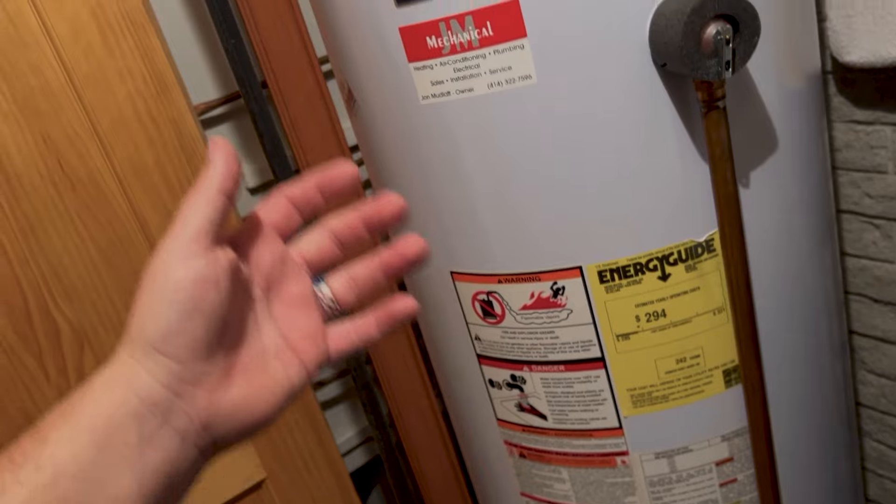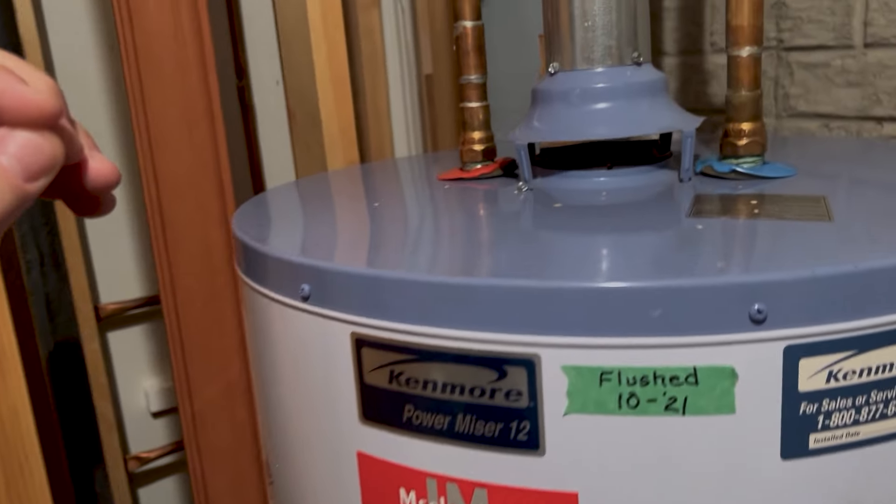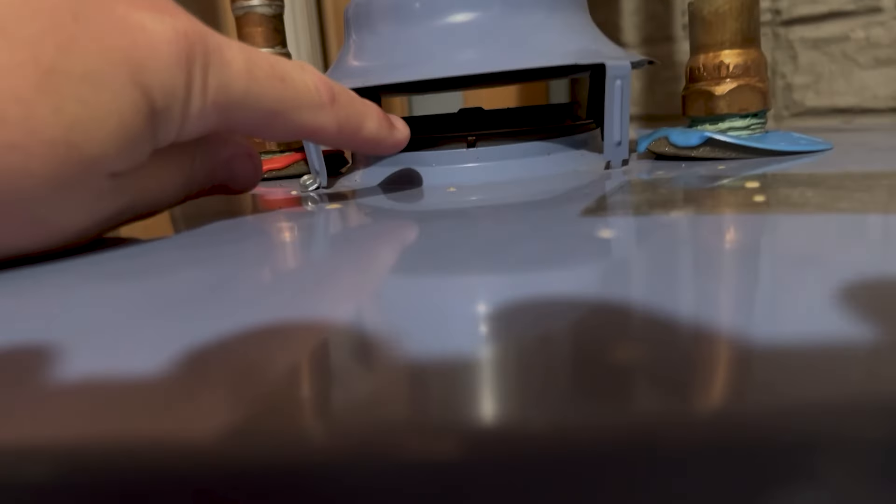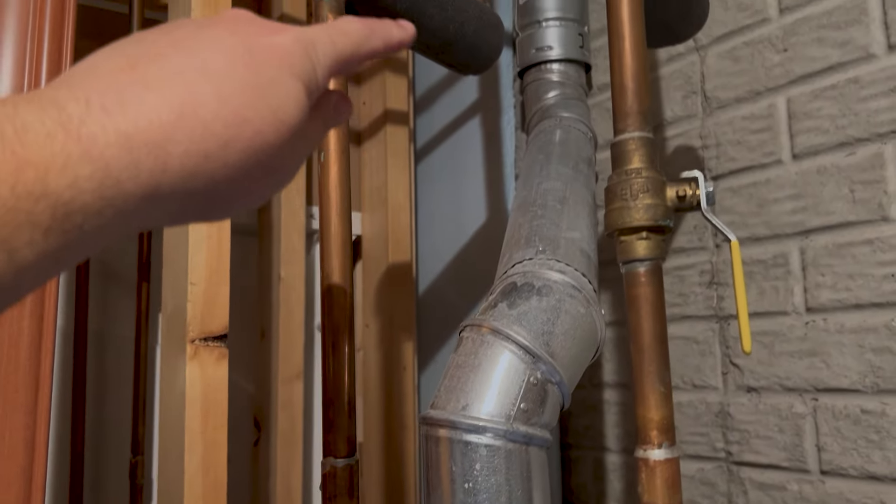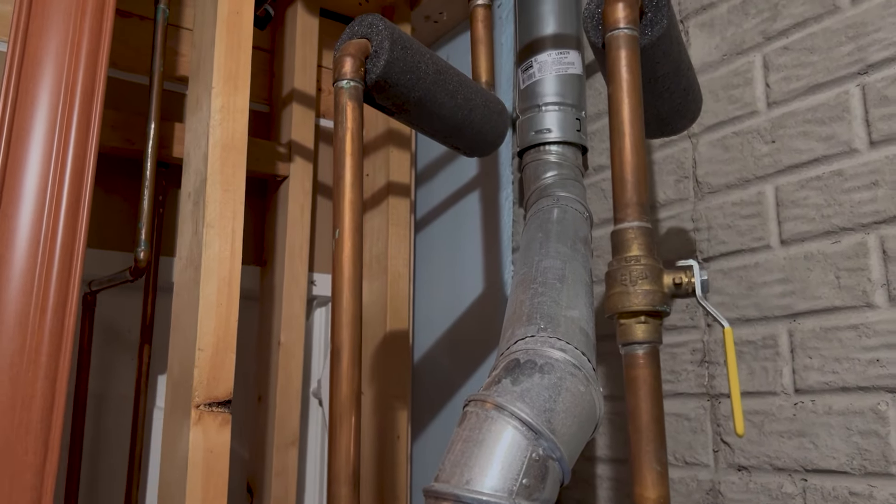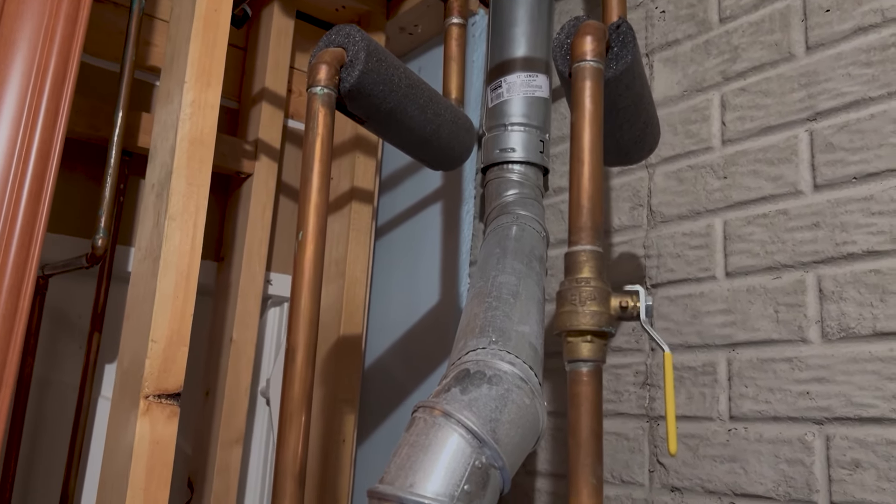Now through that combustion process there's carbon monoxide produced, and the exhaust gases and carbon monoxide are supposed to come up through this vent all the way up and out of the house. This vent goes all the way up through the attic space and then up through the roof.